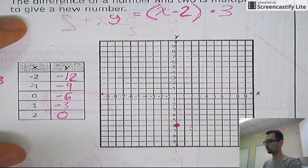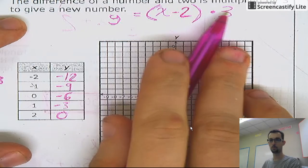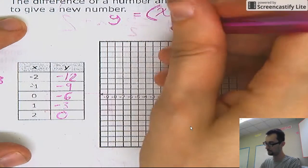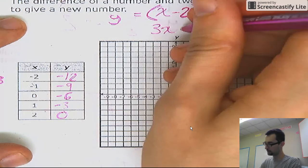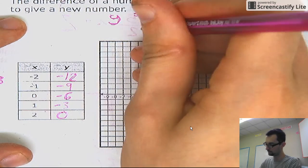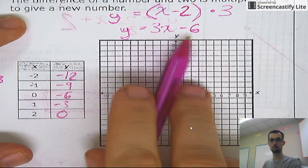Okay. And really, even though it doesn't look like it, I could simplify this, right? The distributive property. Three times x is three x. Three times negative two is negative six. All right. So that's where that comes. This is the y equals mx plus b form.